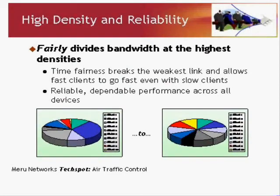Now let's think about high density and reliability — a major component of our system no matter how many channels you have. The key is how many people you can pack into an access point and what your network looks like when you do. We fairly divide the bandwidth not just at low densities but at the highest densities. That means time fairness — a concept that breaks the weakest link phenomenon in wireless. If you have fast clients and slow clients on your network, slow clients, when transmitting the same number of packets, take so much more time that they dominate the conversation.